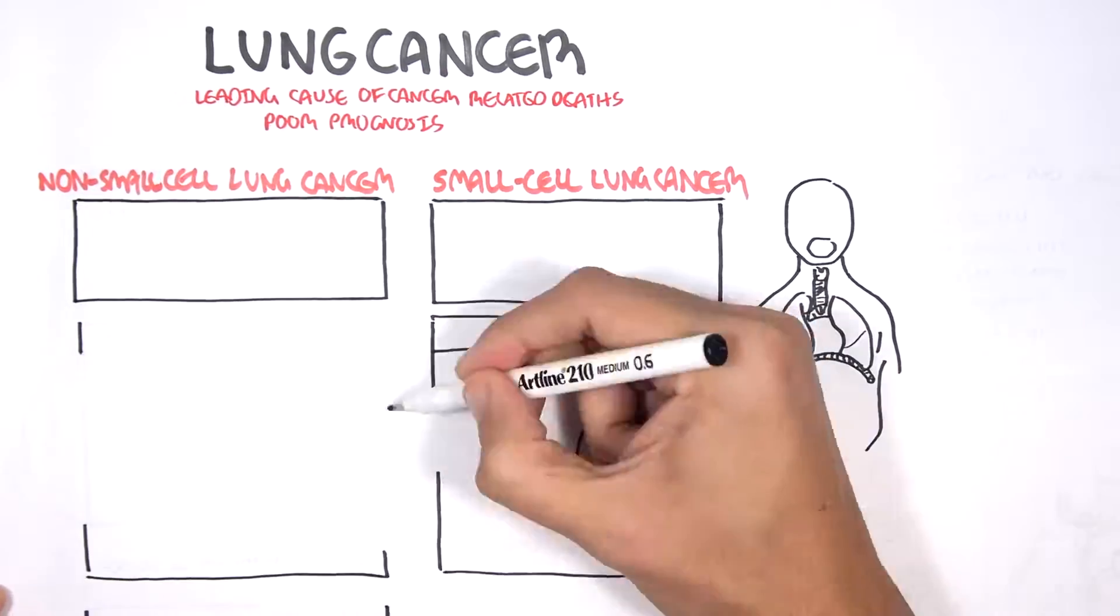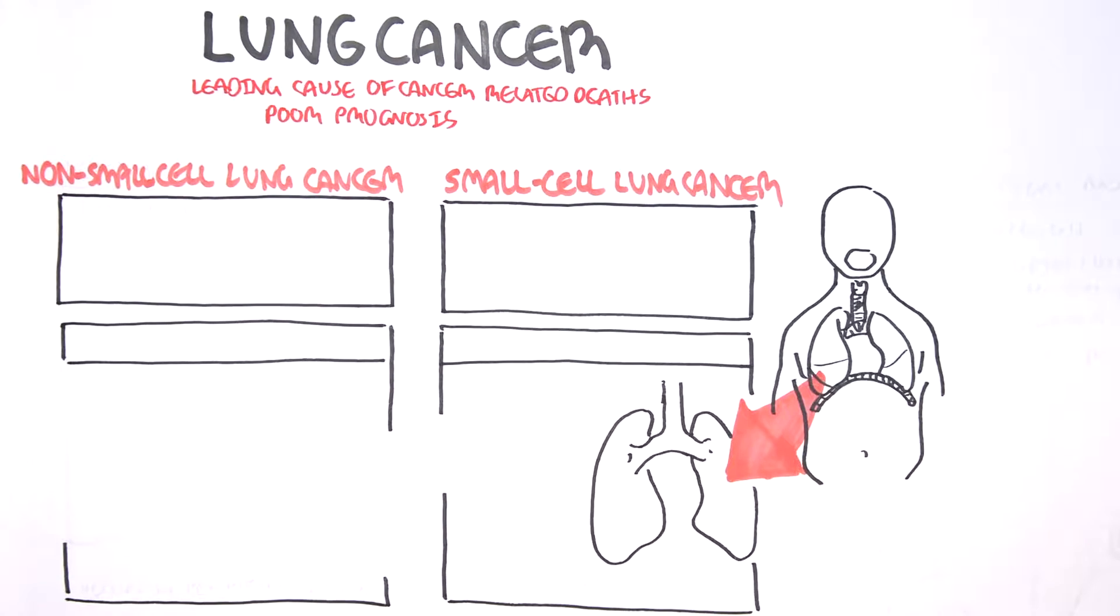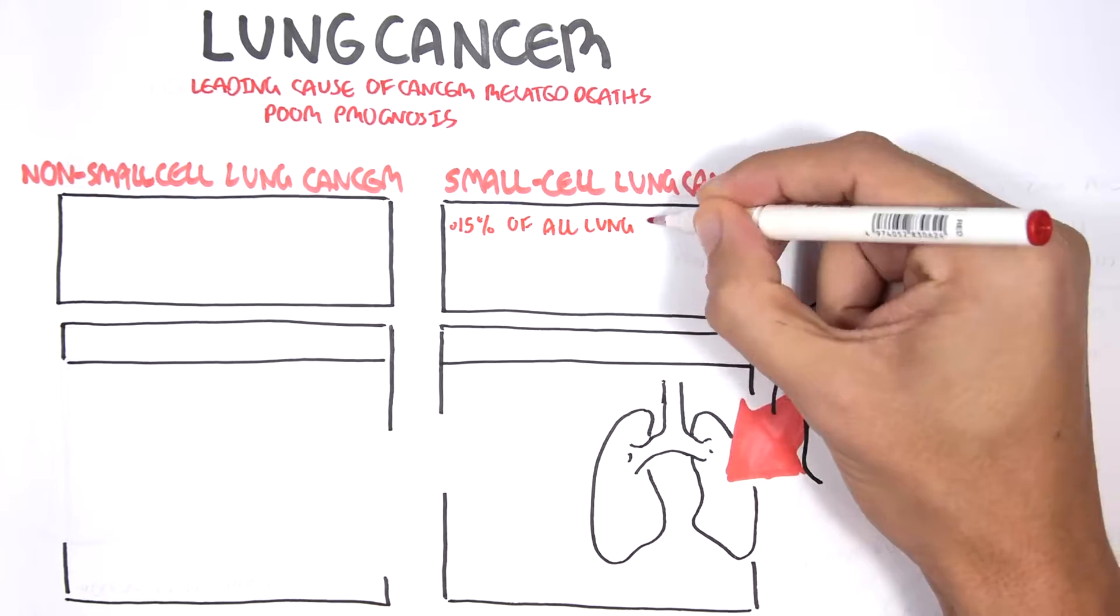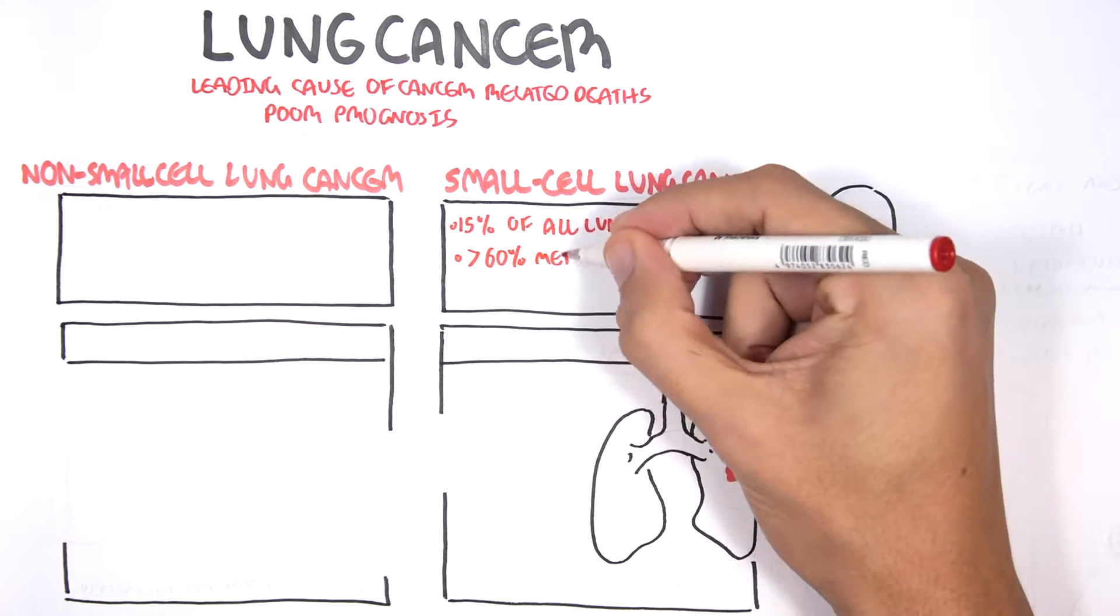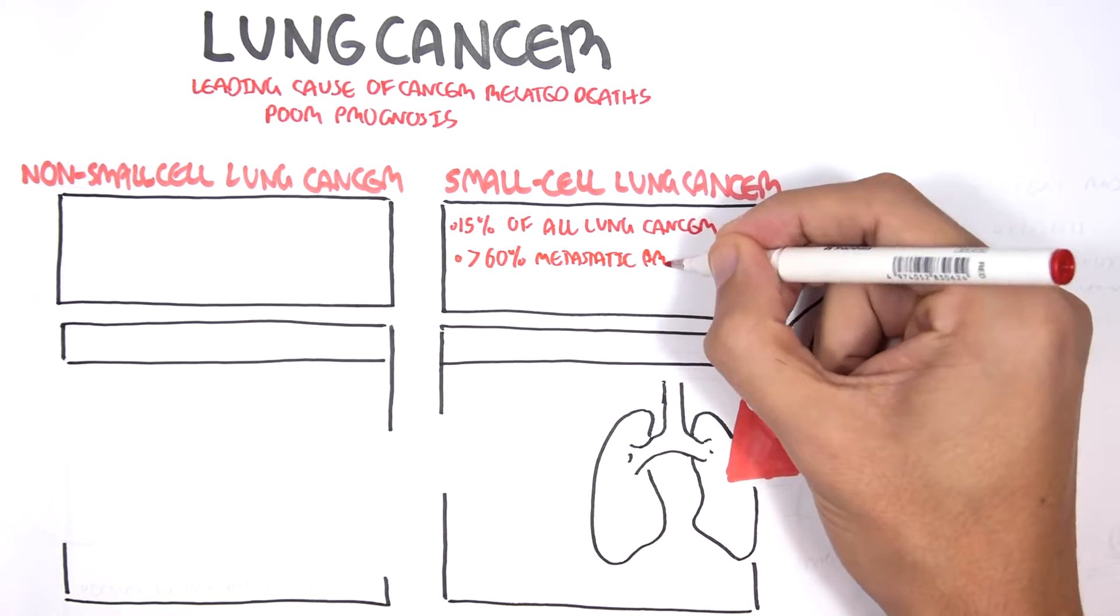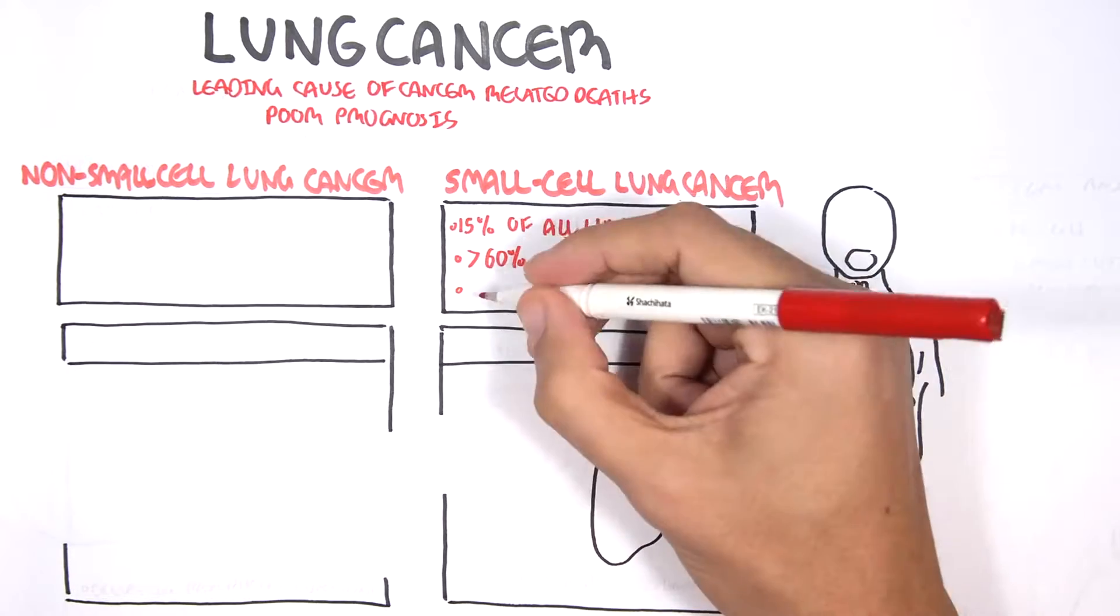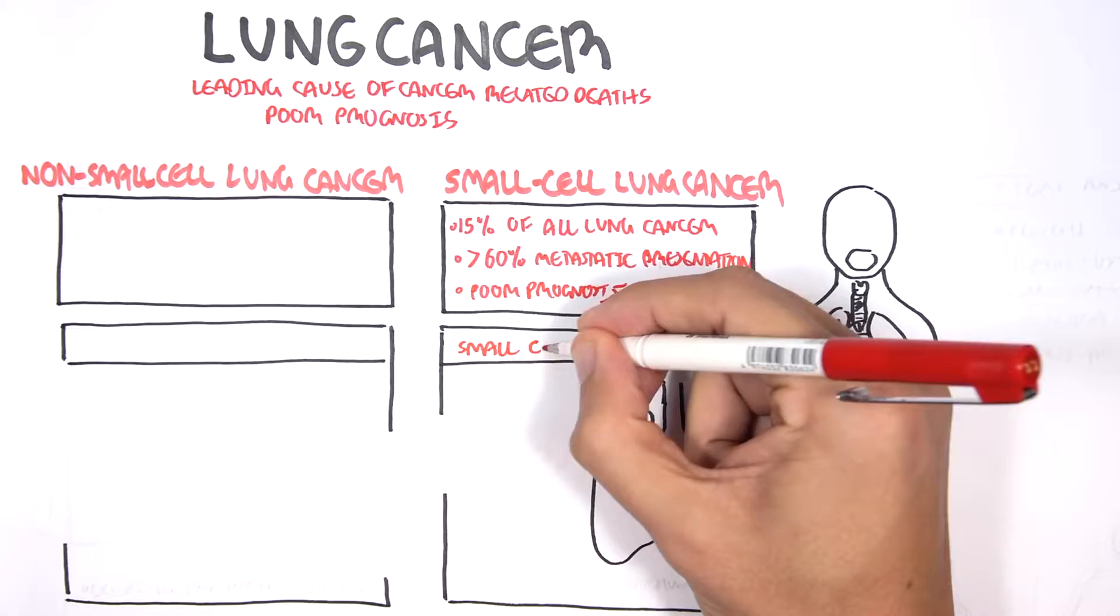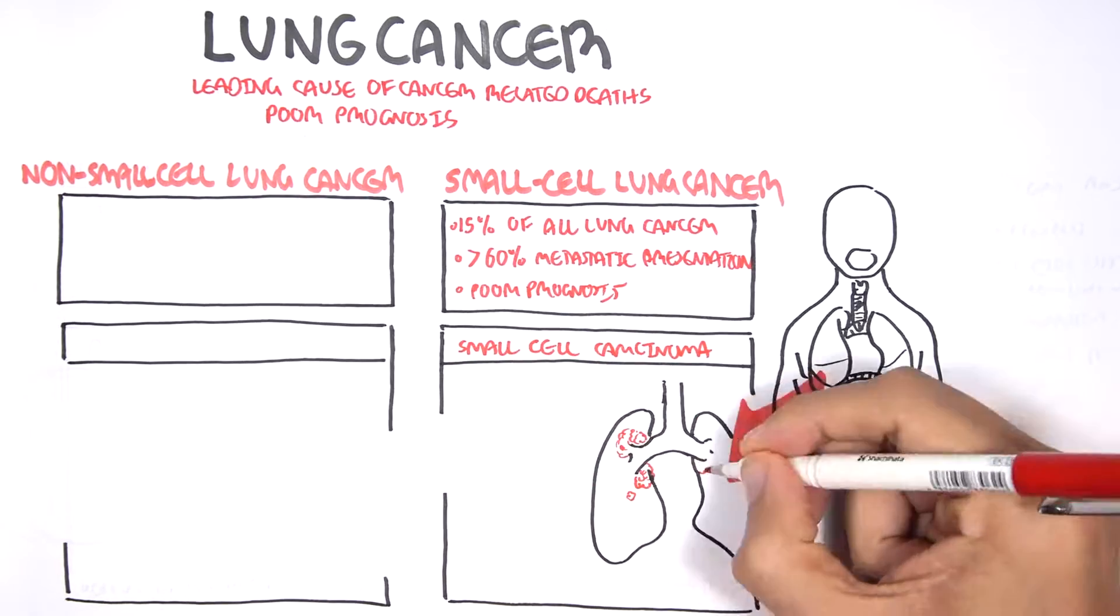Let us focus on small cell carcinoma. Small cell carcinoma represents about 15% of lung carcinomas. More than 60% actually present already with metastases. The prognosis of small cell lung carcinoma is poor. The tumor tends to grow proximally close to the hilum and involves neuroendocrine cells in the area.